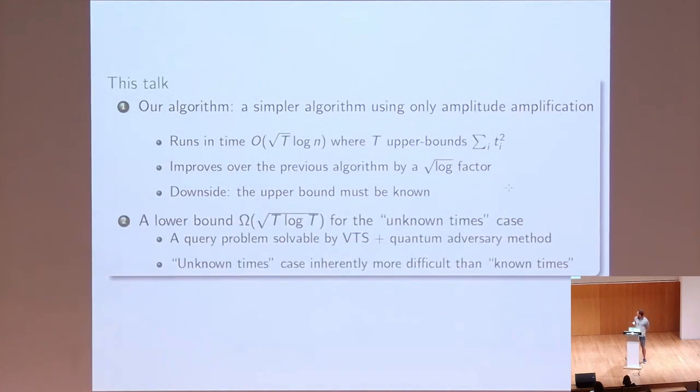And secondly, we also show an improved lower bound for the unknown times case, basically showing that square root of t is not achievable, and this is indeed intrinsically more difficult case than that of known times.